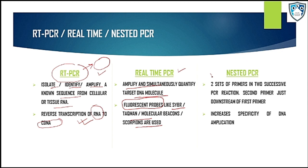The next one is nested PCR where we use two sets of primers and the second primer will bind just downstream of the first primer. The basic use of nested PCR is to increase the specificity of DNA amplification by preventing non-specific amplification of DNA.